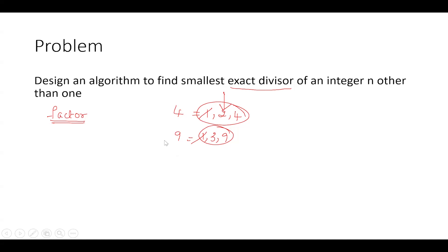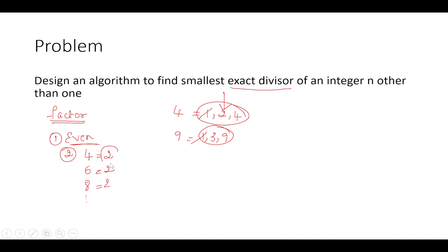There are three situations to consider. The first one is: what if the number is an even number? Apart from two, which is a prime number, if I take 4, the smallest divisor apart from 1 is 2; for 6, it is 2; for 8, it is 2 — and so on. So the moment we find that the given number is even, we can simply say the output is 2, because the smallest divisor apart from 1 for any even number will be 2.